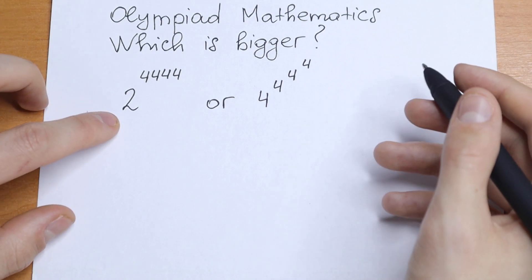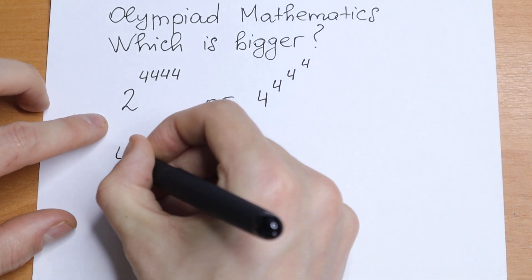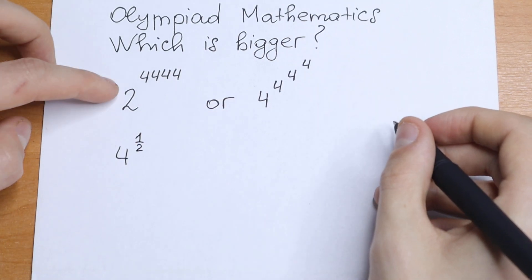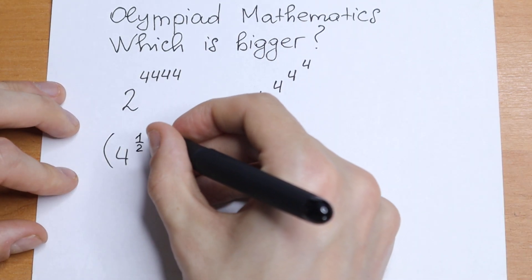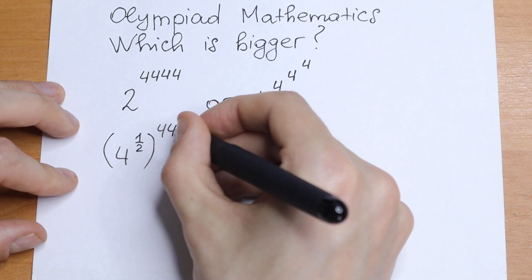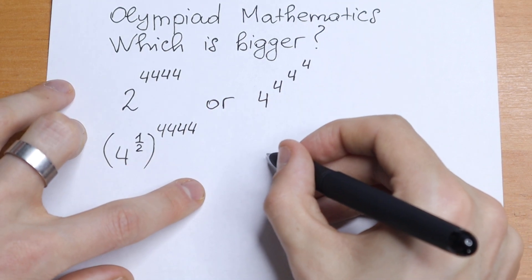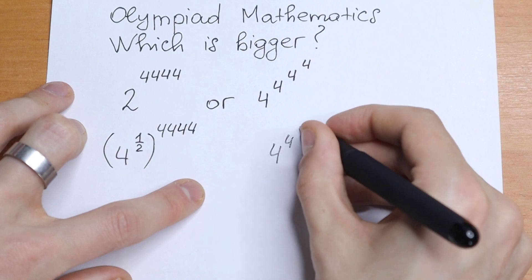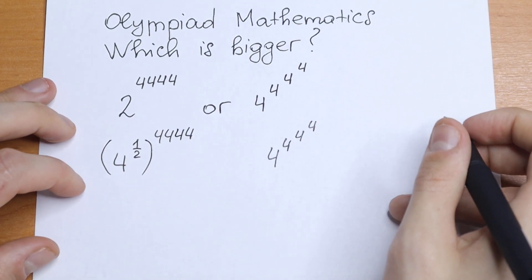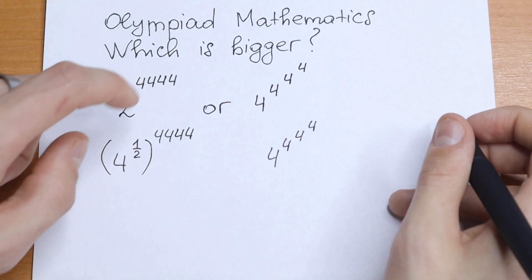But take a look on the left. What we will have? We will have 4 to the power one-half — this will be our 2. And we raise this to the power 4444. On the right we will have the same: 4 to the power 4 to the power 4 to the power 4.